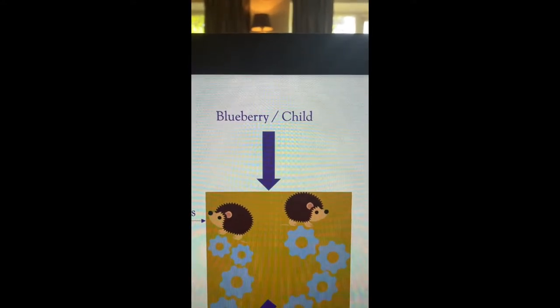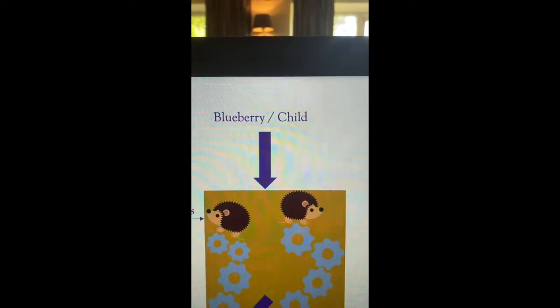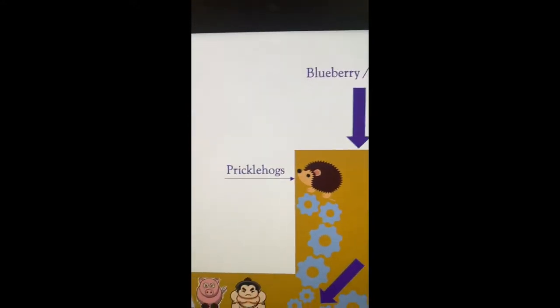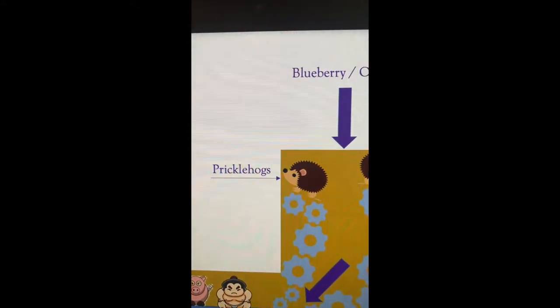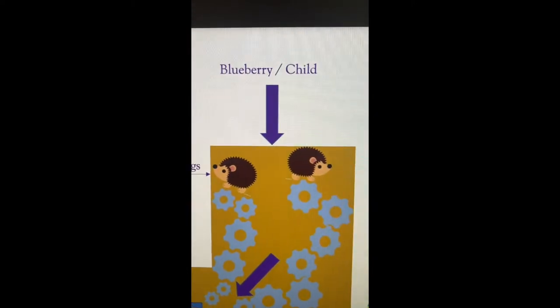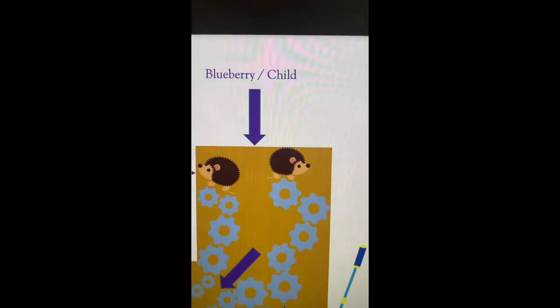So the blueberry or child goes into the Wonka-tastic super juicer. First of all, the child or the blueberry gets pricked by the prickle hogs, which bursts them, and the juice starts to come out.